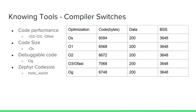-Og is a relatively new optimization option. During development you can use it to get a good debug view — it applies optimizations without hampering your debug view. Most of the time when you enable optimizations and start debugging, the logic flow flips around and you lose context when stepping through code. So -Og is a good option to try if you want a good debugging experience while still applying some optimizations.